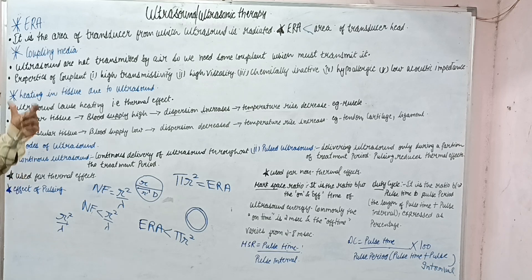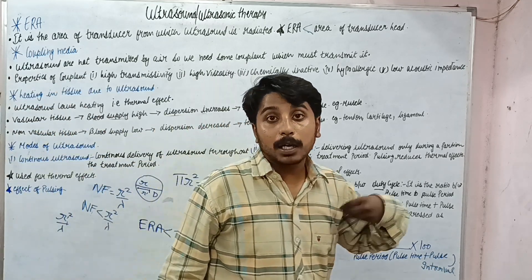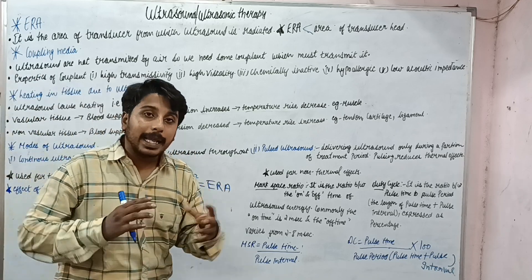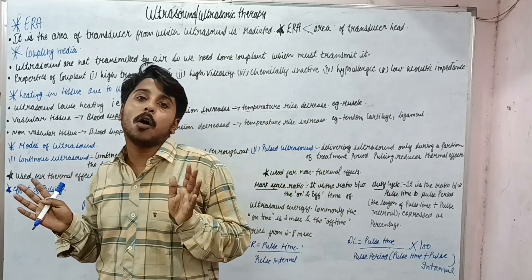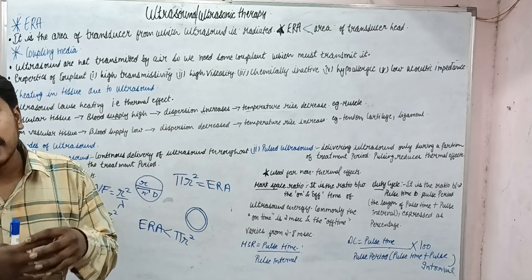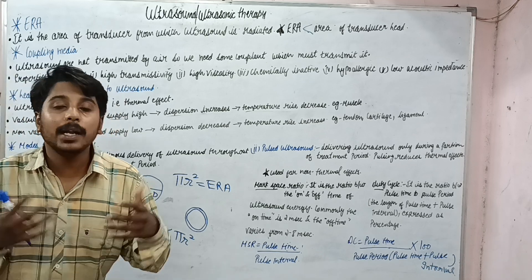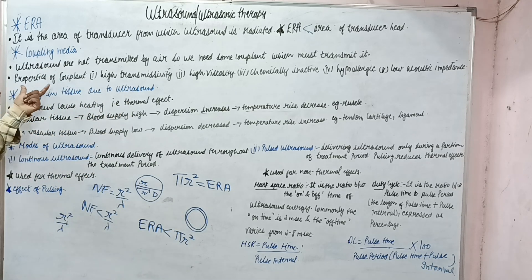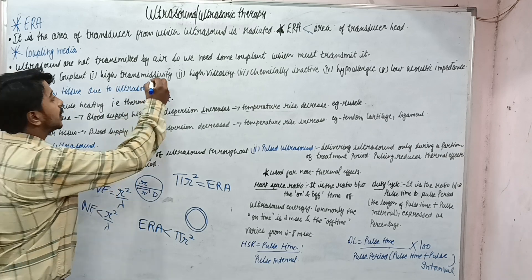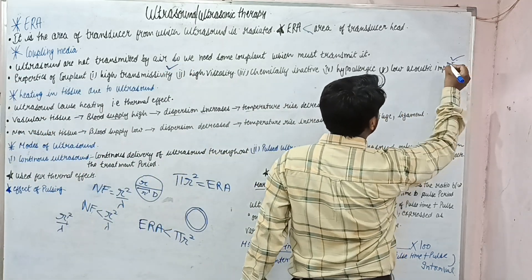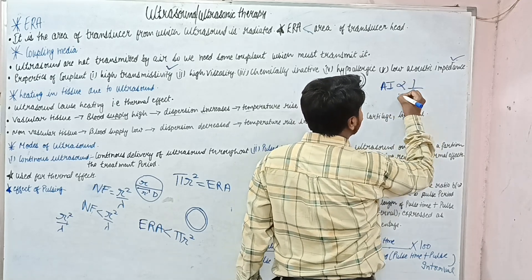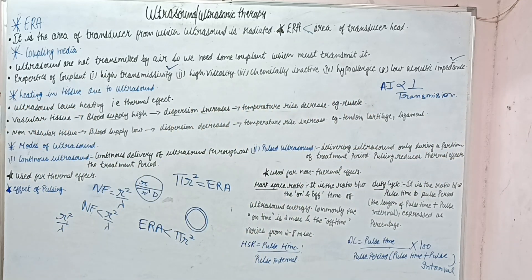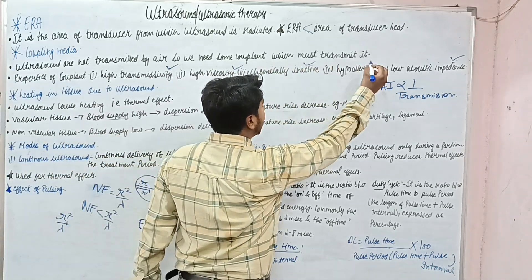Next is coupling media. To transmit the ultrasound we use a coupling media called couplant to increase transmission. We do not use air because air has many particles causing wave reflection, and reflected waves traveling back toward the ultrasound head can damage the crystal. Properties of a good couplant are: high transmissivity, low acoustic impedance (since acoustic impedance is inversely proportional to transmission), high viscosity, chemically inactive, and hypoallergenic.